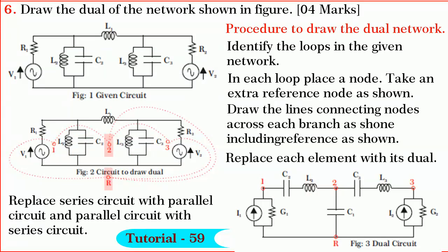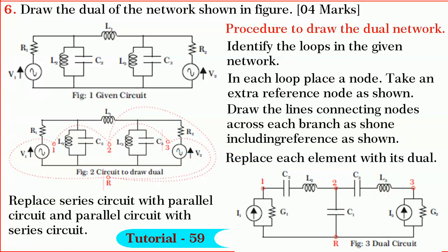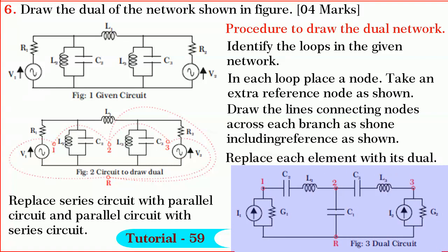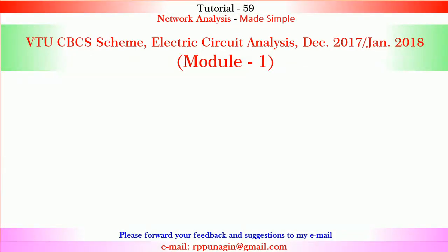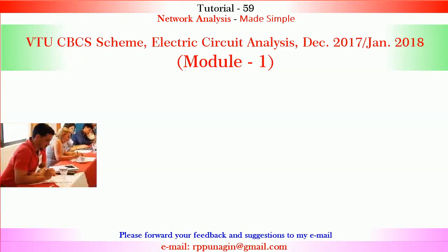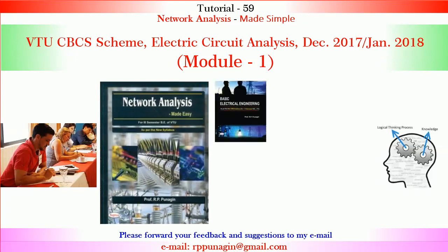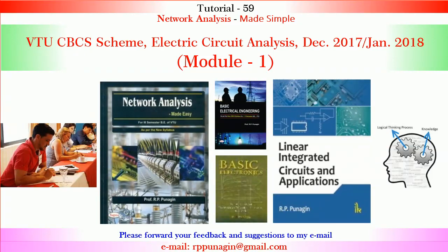Similarly, between node 2 and the reference node, L1 is replaced by C1. Between node 2 and node 3, L3 and C3 are in parallel, so L3 is replaced by C3 and C3 is replaced by L3 in series. Finally, between node 3 and the reference node, V2 and R2 are in series, so V2 is replaced by I2 and R2 is replaced by G2 in parallel. The entire dual network drawn is shown in figure. For strengthening your basic concepts and developing your thinking process, I suggest you refer to my textbooks: Network Analysis Made Simple, Basic Electrical Engineering, Basic Electronics, and Linear Integrated Circuits and Applications, which are available online. Thank you for watching this video.